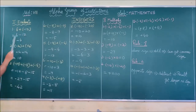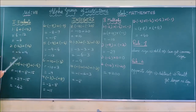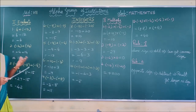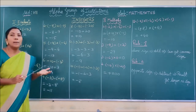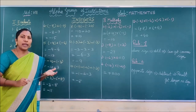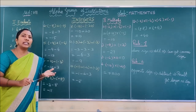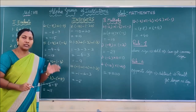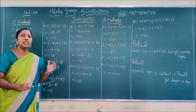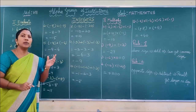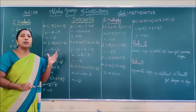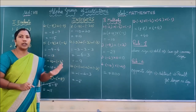The multiplication of signs follows the multiplication rule. What is the multiplication rule? Plus into plus gives plus. Minus into minus gives plus. Plus into minus gives minus. Minus into plus gives minus. That is: different symbols give negative, and same symbols give positive.